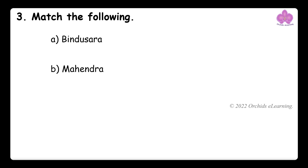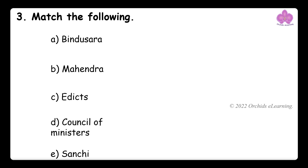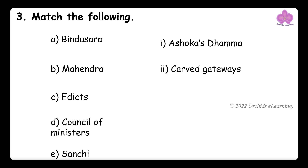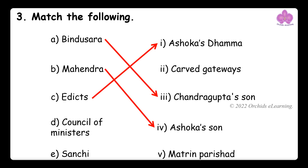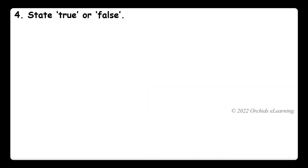The Lion Capital is located at Sarnath. Match the following — look at the options in Column A and Column B and answer: Bindusara is Chandragupta's son; Mahendra is Ashoka's son; Edicts refer to Ashoka's Dhamma; Council of ministers is the Mantri Parishad; Sanchi is known for its carved gateways.